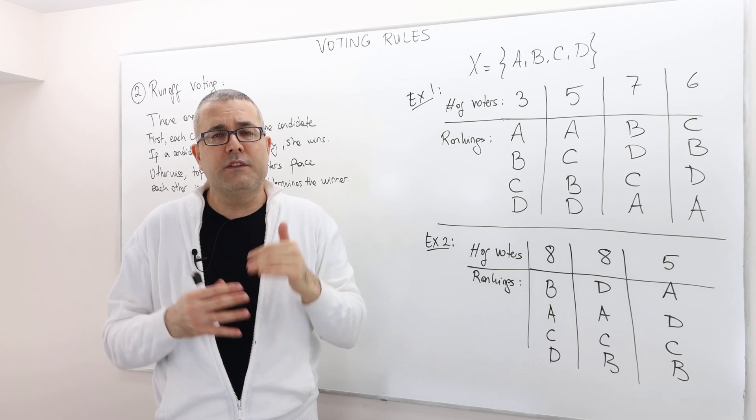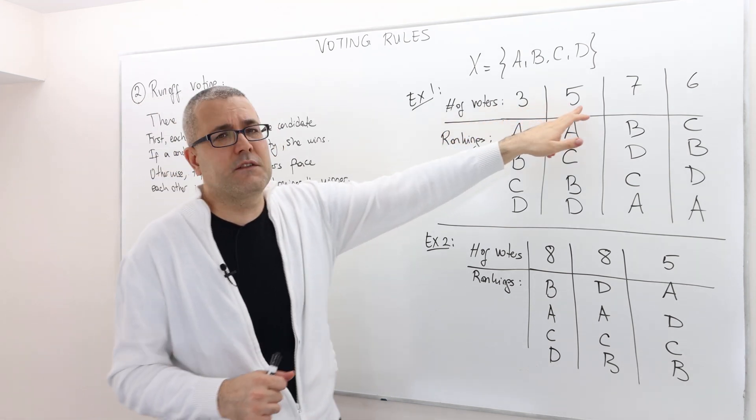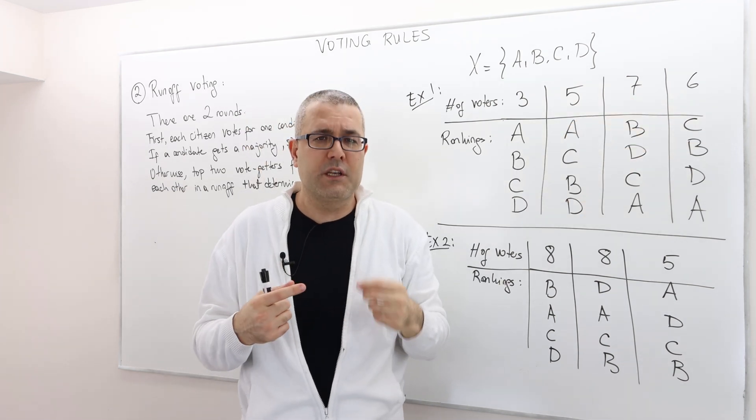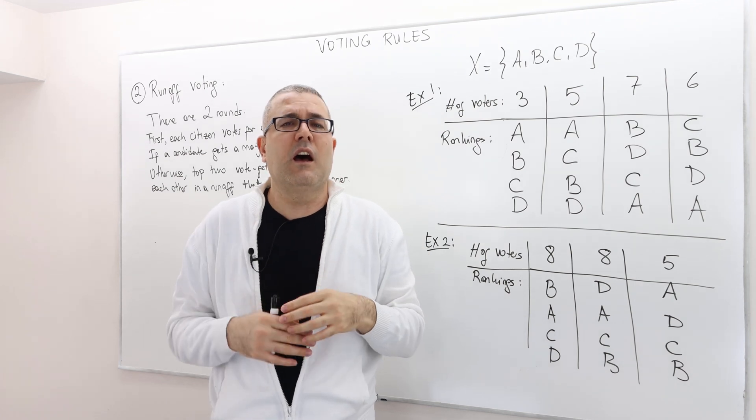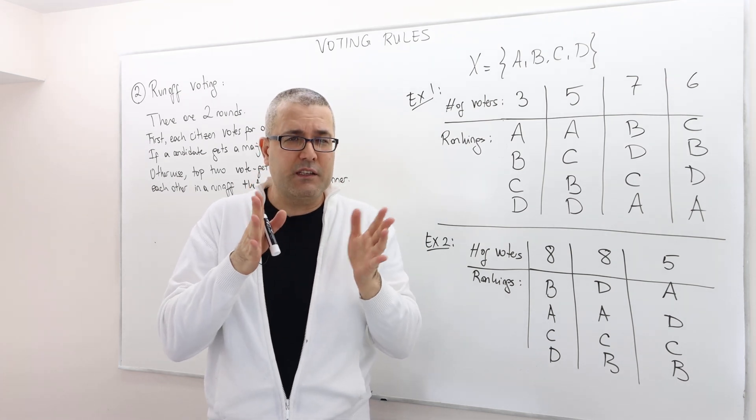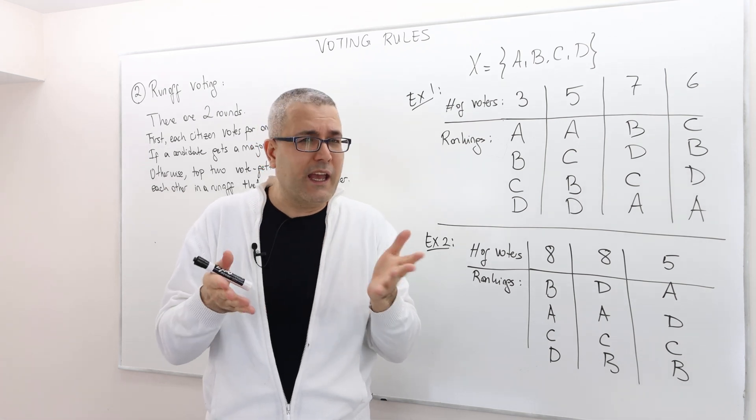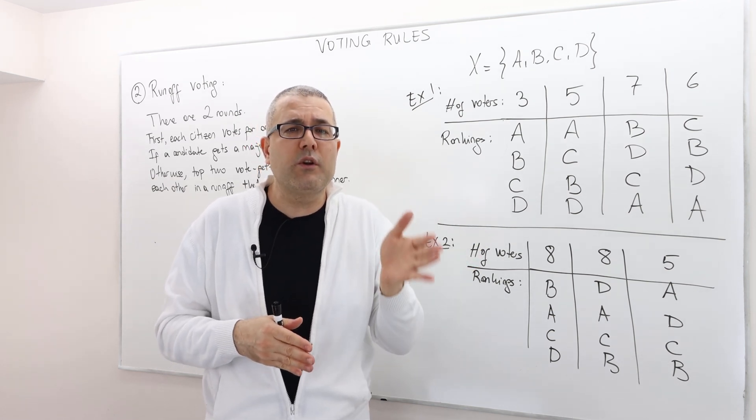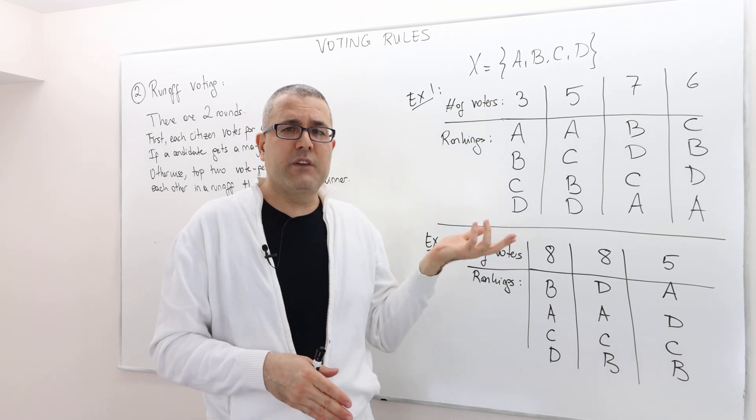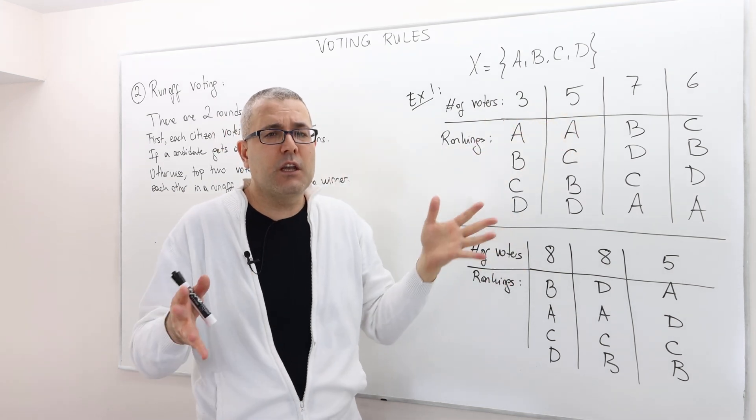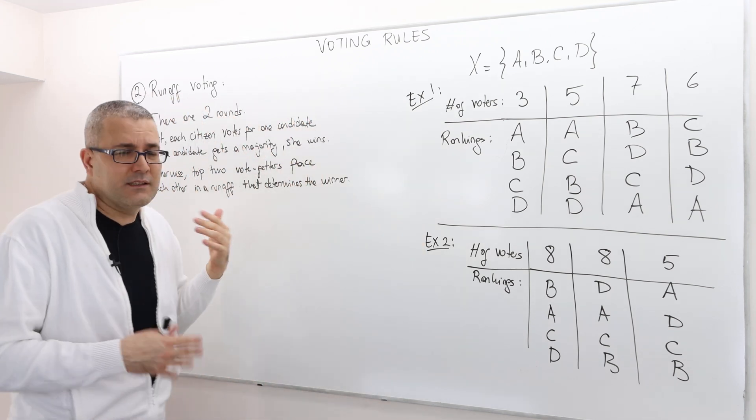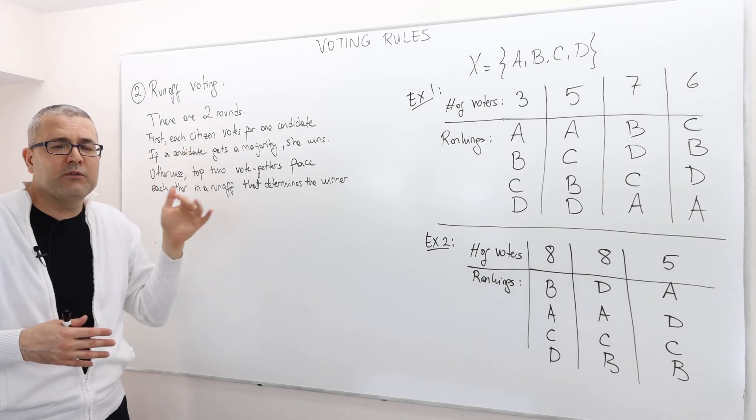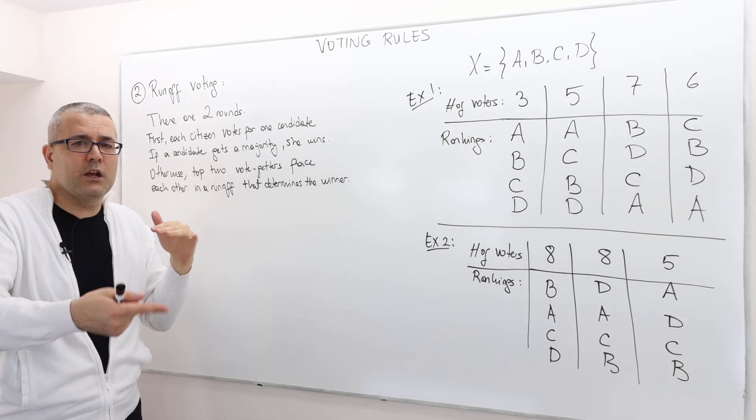Is there any majority winner? We have three plus five, eight plus seven, 15 plus six, 21 voters. So what would be the majority? If you divide 21 by two, you're going to get 10.5. So as long as somebody receives more than or equal to 11 votes, they get the majority. But nobody gets 11 votes. So there's no majority winner. For that reason, in this example, the first round is not going to determine the outcome. The voting is going to go to the second round.